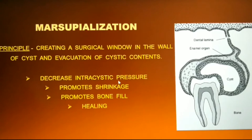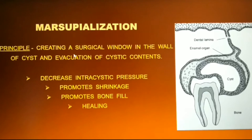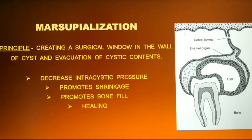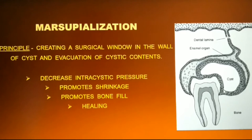According to the hydrostatic theory, increased inflammatory reactions within the cyst increase the intracystic pressure. By creating a window and evacuating the cystic contents, we are decreasing the intracystic pressure. This will promote the shrinkage of the cystic lining. Once the lining is reduced, the cystic space begins to get filled by bone, growing from the periphery to the center of the lesion. This is how healing of the cystic cavity takes place following marsupialization.